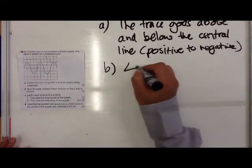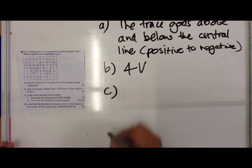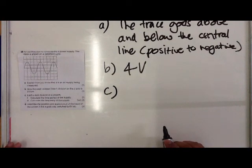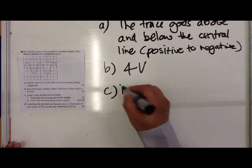Question (c) says each axis division is 0.01 seconds per centimeter—so that's on the x-axis. Then for part one, it says calculate the time period of the supply.